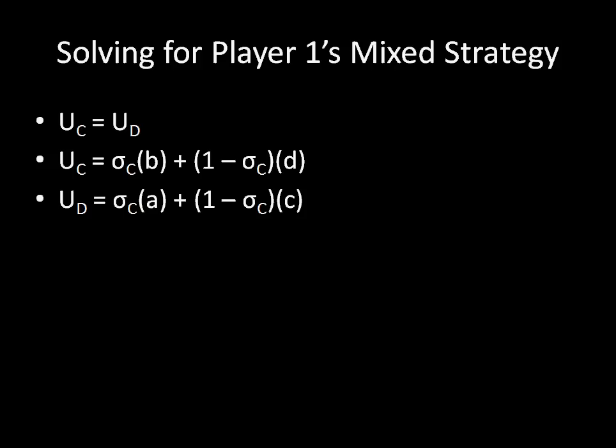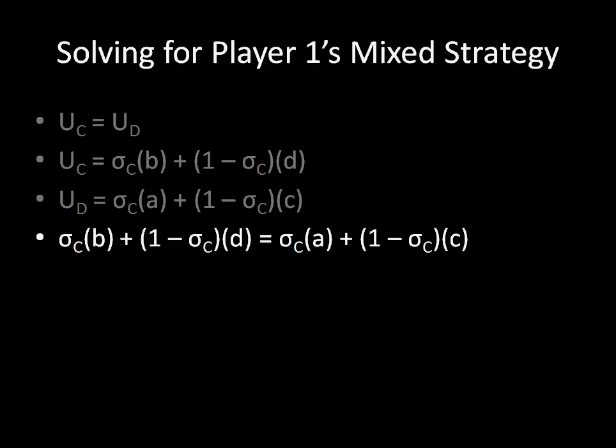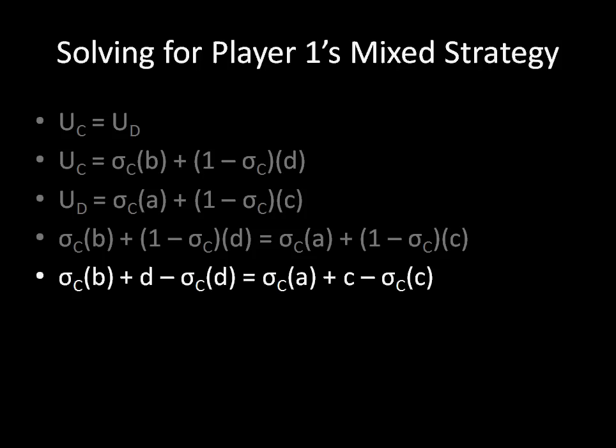We begin by using substitution to isolate sigma. A lot of people get tripped up here because they see five different variables: sigma, A, B, C, and D. But remember that A, B, C, and D are exogenous variables given to us ahead of time. We aren't actually solving for them. They're just regular numbers with the rule that A is greater than B is greater than C is greater than D.